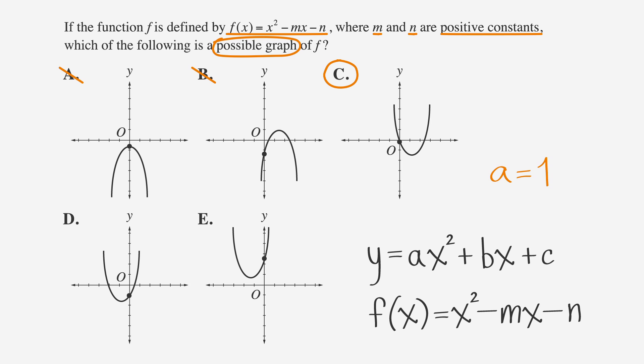However, if you didn't remember the rule about coefficient b, you could try to eliminate more choices using the constant c, which in this question is negative n. Because n is negative, it means the y-intercept is below the x-axis. Choice e has a positive y-intercept and we want a negative y-intercept, so we can eliminate choice e. That would leave you with choices c and d, where you could use the rule for coefficient b to find the answer.